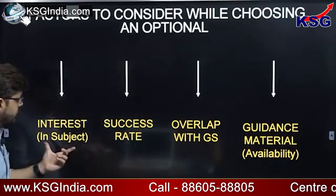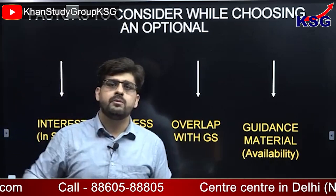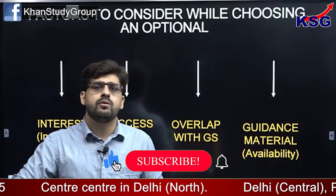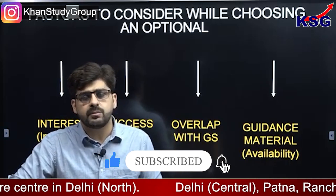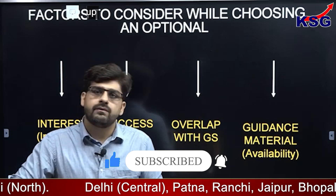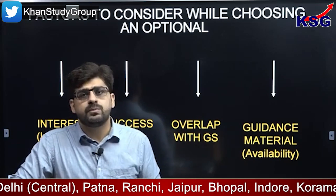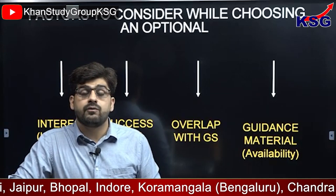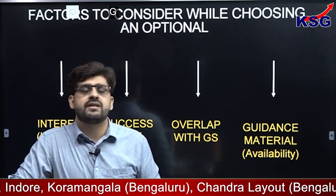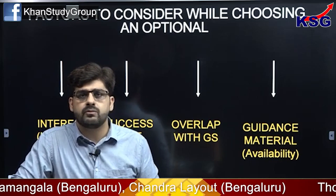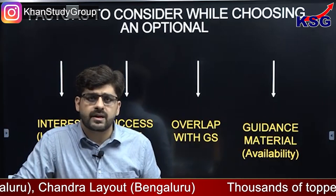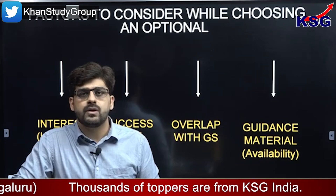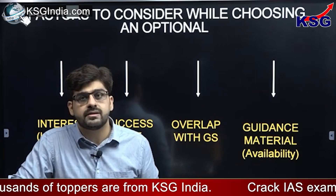If I talk about interest in the subject, many of you coming from the humanities background have an interest in humanities subjects. You would want to go for sociology, PSIR, public administration, these kinds of subjects. For others from the management background, they would want to pursue commerce or management as their optional. For those coming from the engineering background, they might want to pursue physics, chemistry, or mathematics. Interest in the subject remains paramount because you have to stay with the subject for a period of 1 to 2 years. Interest in the subject remains one of the foremost considerations while choosing an optional.